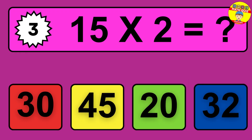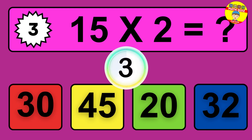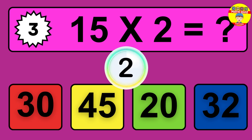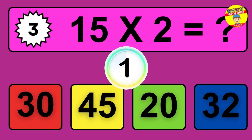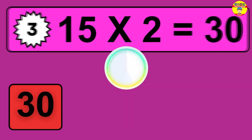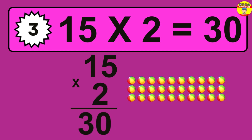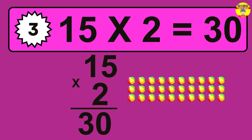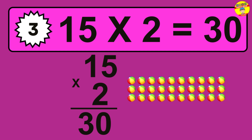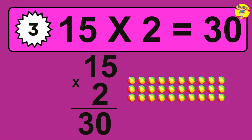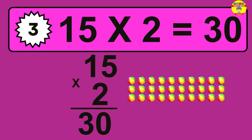Question three: 15 times 2 equals what? The answer is 15 times 2 is 30. To calculate, we have 15 groups with 2 balls each. So how many balls do we have? 30 balls.